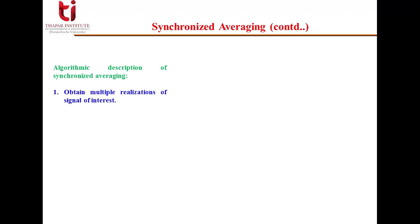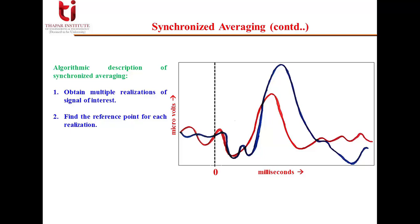Now let's see the brief description of the algorithm. So first is we have to obtain the multiple realizations of the signal of interest. Next is we have to find the reference point for each realization. Reference means that can be a trigger point. If I talk about ECG signal, QRS complexes I can fix that alignment, or it can be the onset of stimulus.